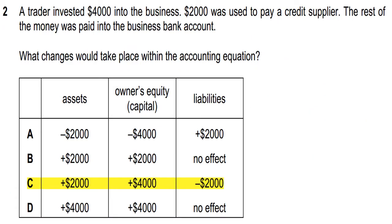Question 2: a trader invested $4,000 into the business. $2,000 was used to pay a credit supplier; the rest was paid into the business bank account. What changes would take place within the accounting equation? Option C is correct because capital will increase by $4,000 as the trader invested $4,000 into the business, and the bank asset will increase by $2,000.